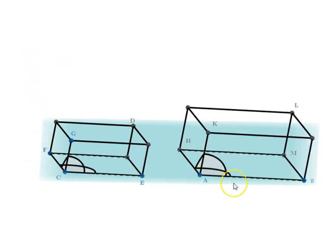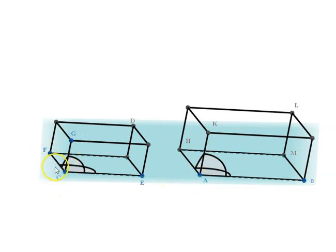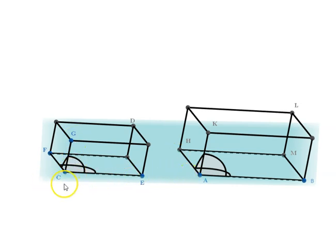Now we just have to prove that the two solids are similar. To prove that, we use proportions. We said EC is to CG as AB is to AK, and we use the proportion CG is to CF equals AK is to AH. We can combine these two proportions into a single one: AB is to AK is to AH equals CE is to CG is to CF. Equally, CE is to CF as AB is to AH. So the proportionality is clear.